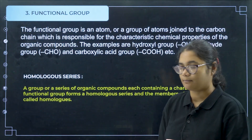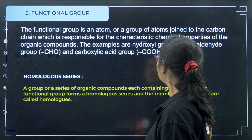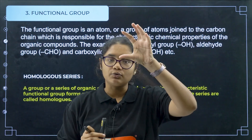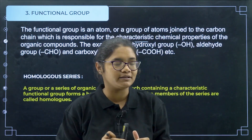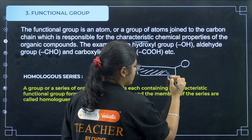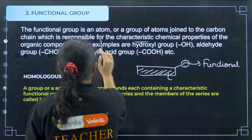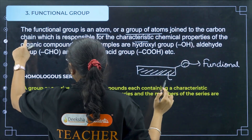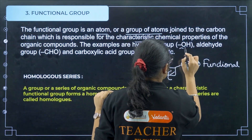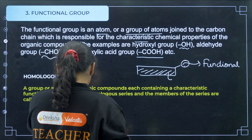Coming to something called functional group — this is also very, very important. A functional group is an atom or a group of atoms joined to the carbon chain which is responsible for the characteristic chemical properties of the organic compound. If some group is attached to the carbon compound and this group changes the chemical properties of the compound, then we can say that this group is a functional group. Examples include: the hydroxyl group (OH), the aldehyde group (CHO), and the carboxylic acid group.